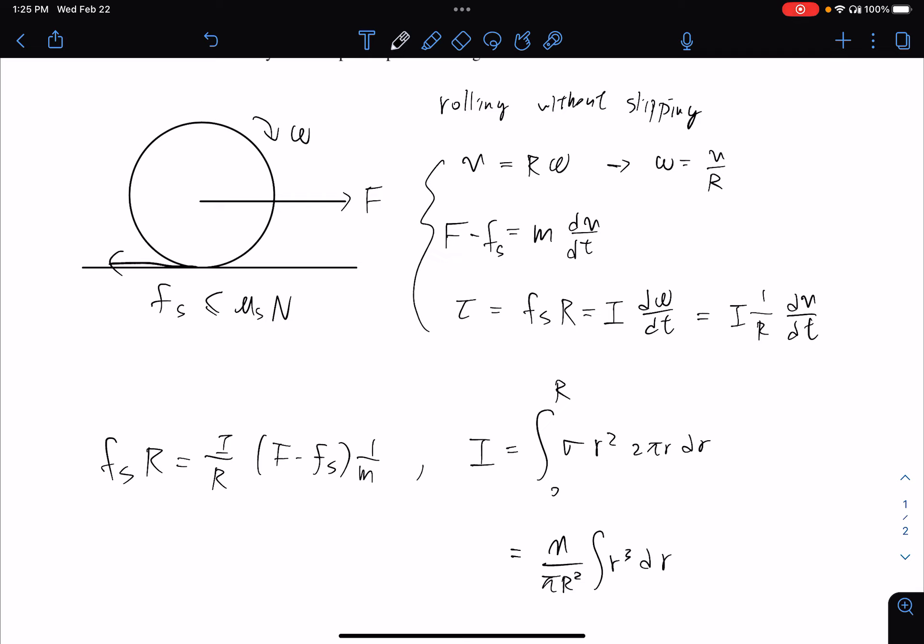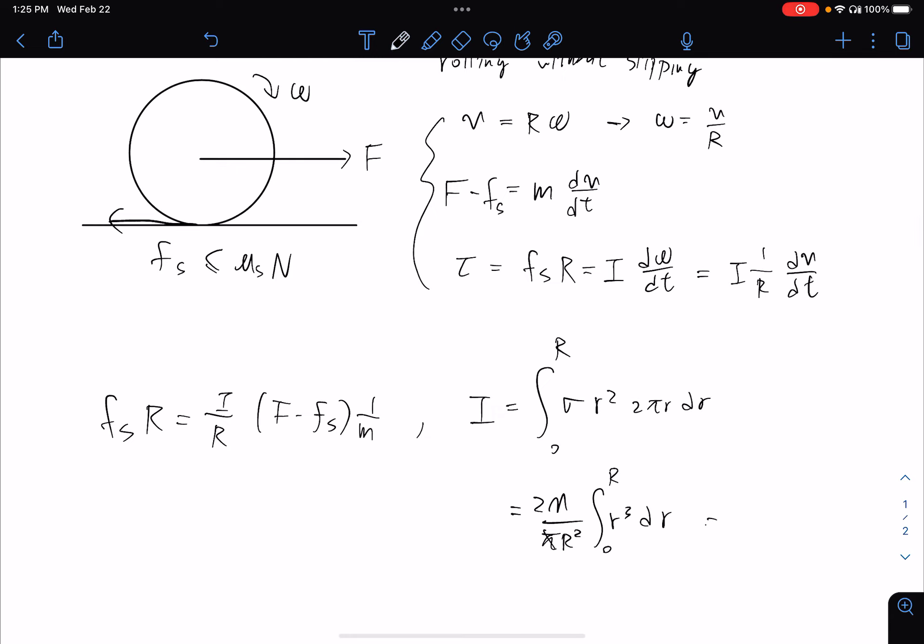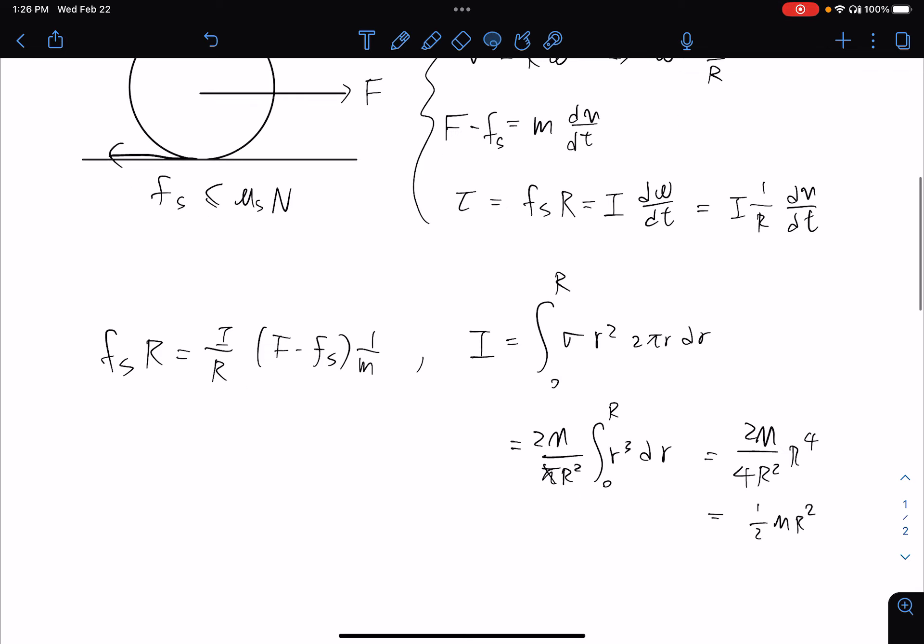We have 2πr and that will give us 2mr to the fourth. So we have 1/2 mr². So for this disk the moment of inertia is 1/2 mr².